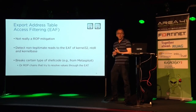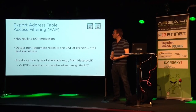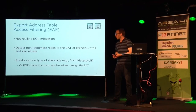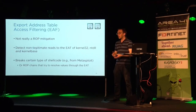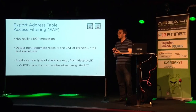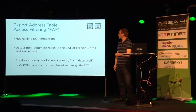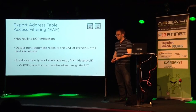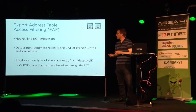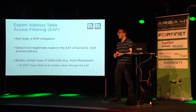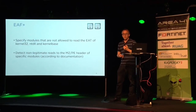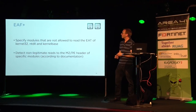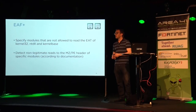The next mitigation is export address table access filtering (EAF). This isn't really a ROP mitigation, but it prevents a lot of off-the-shelf exploit code like Metasploit payloads. EAF checks read accesses to the export address table of three critical system libraries: kernel32.dll, ntdll.dll, and kernelbase.dll. Whenever someone reads from the export address table of these functions, EMET triggers, using hardware breakpoints. EAF+ adds blacklisting of specific modules to further prevent reading of this export address table.